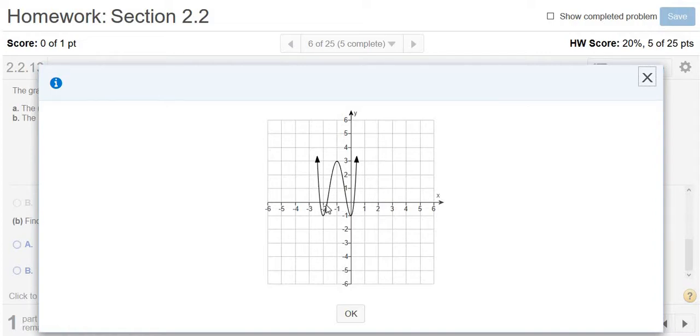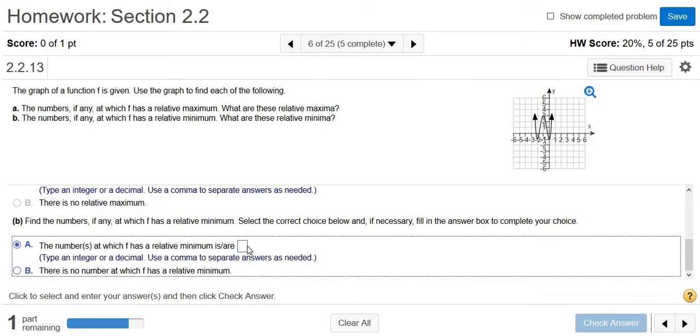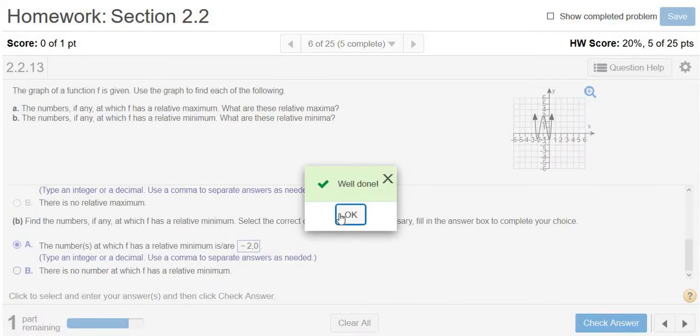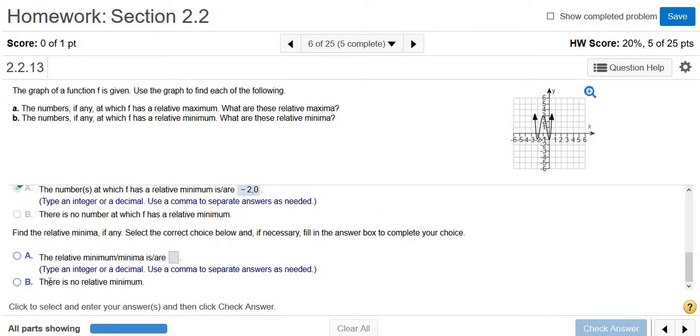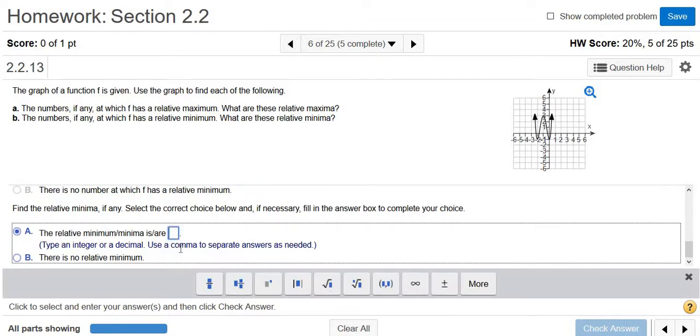At negative 2, the minimum is negative 1. And at 0, the minimum is negative 1. So negative 2 and 0, those are the x values where we have our minimum. So negative 2 comma 0. And then in this case, our relative minimum is negative 1. It's our smallest y value.